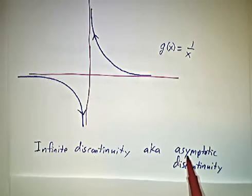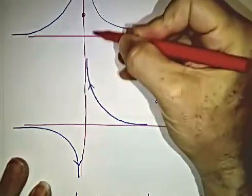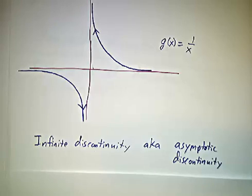And it's sometimes called an asymptotic discontinuity, because the vertical axis, the vertical line, you have a vertical asymptote. And that's what's happening here.